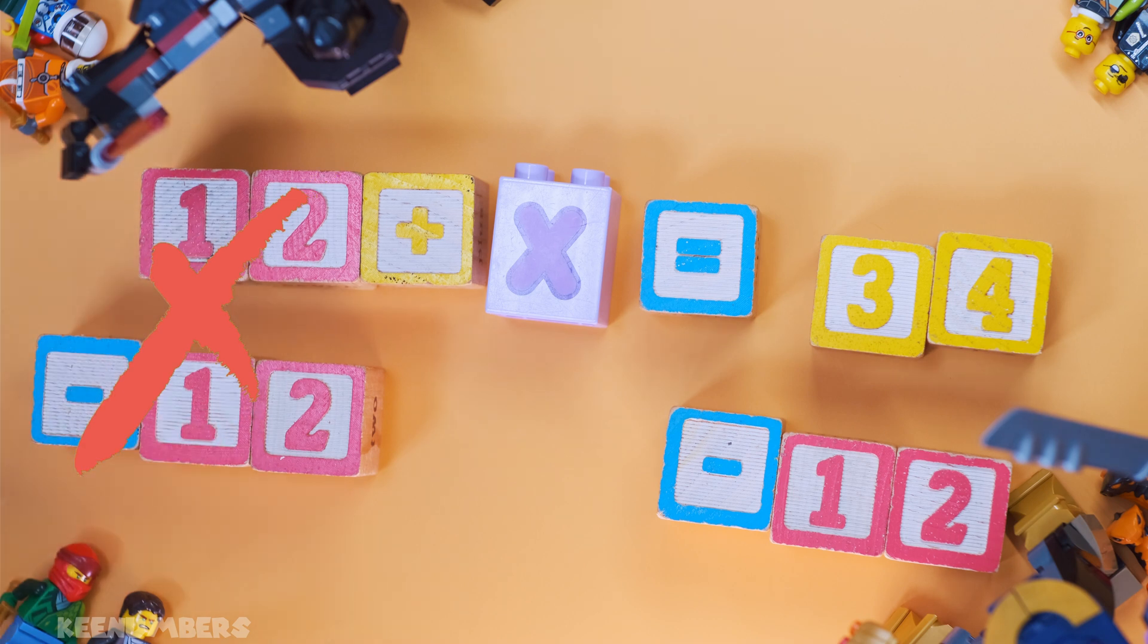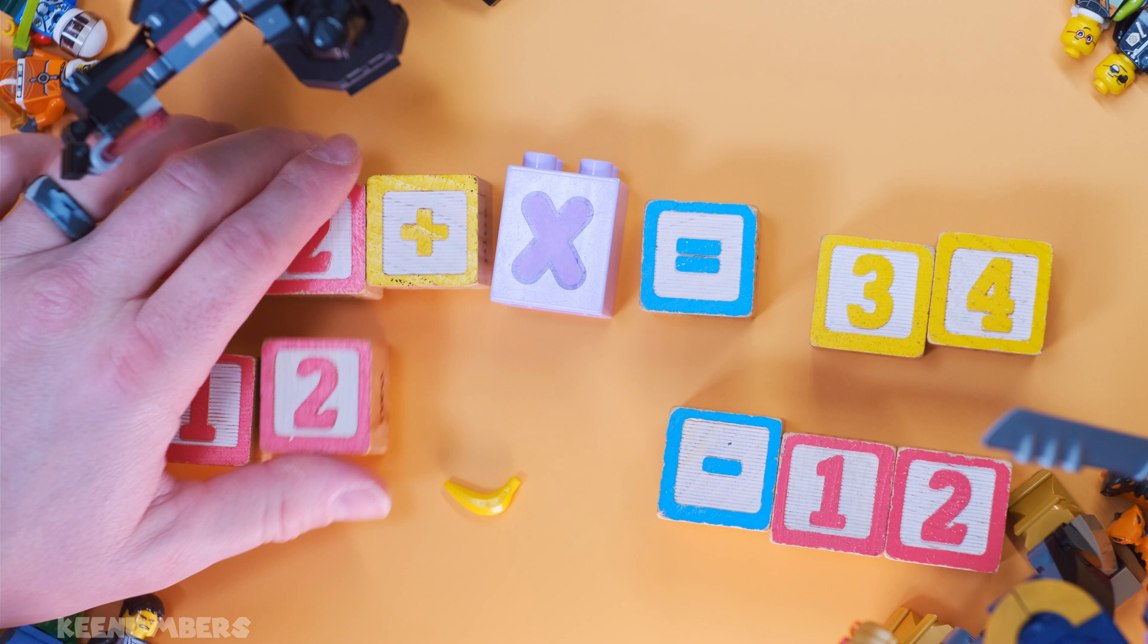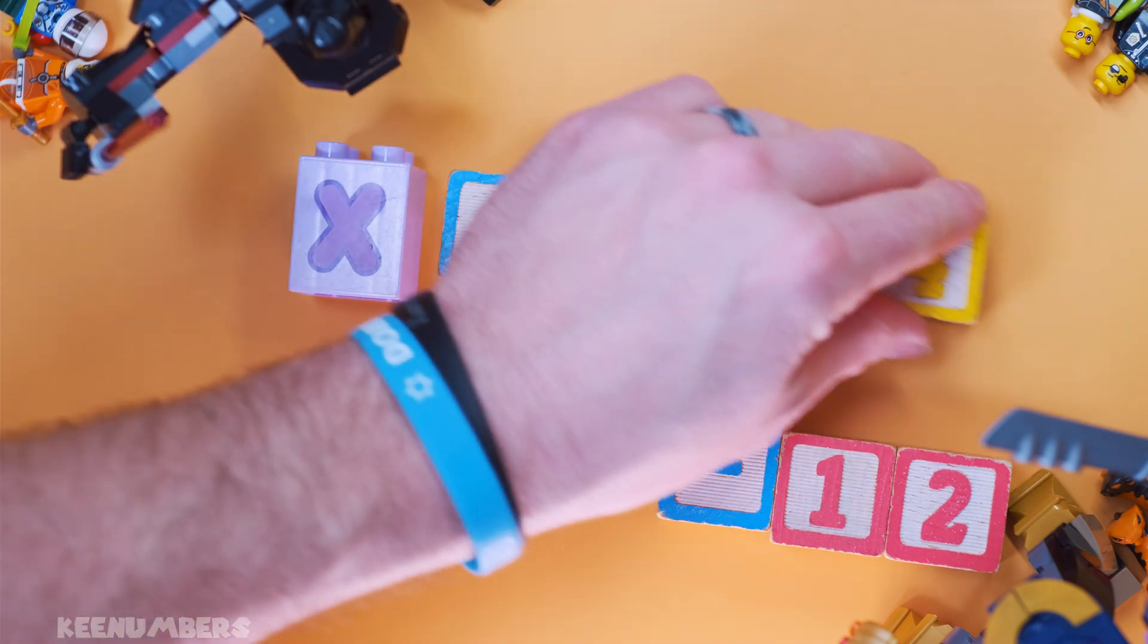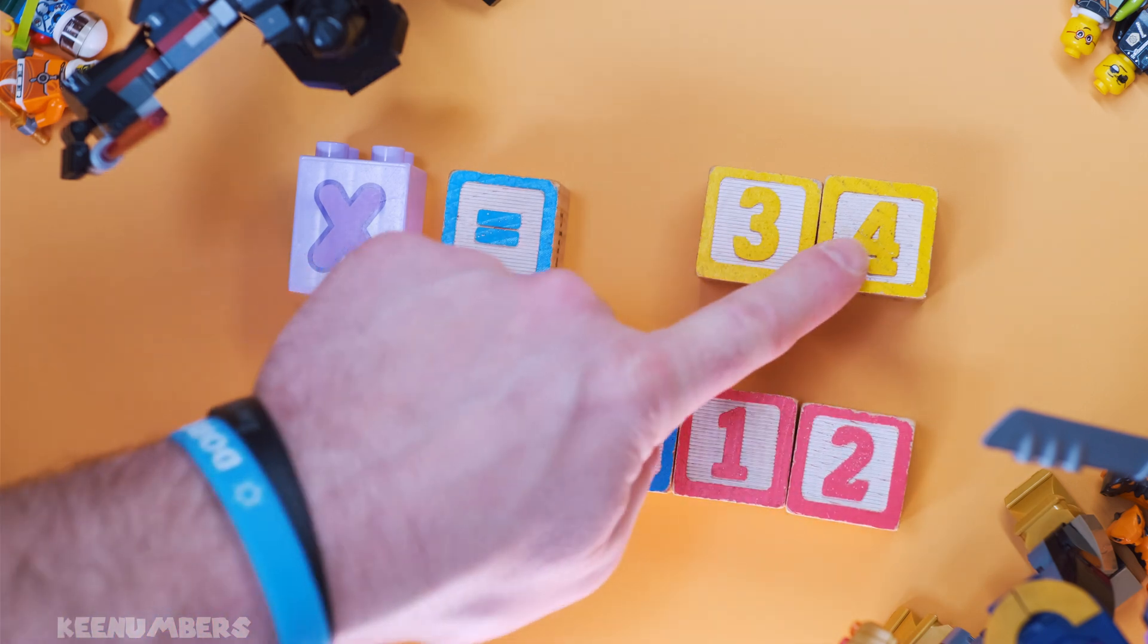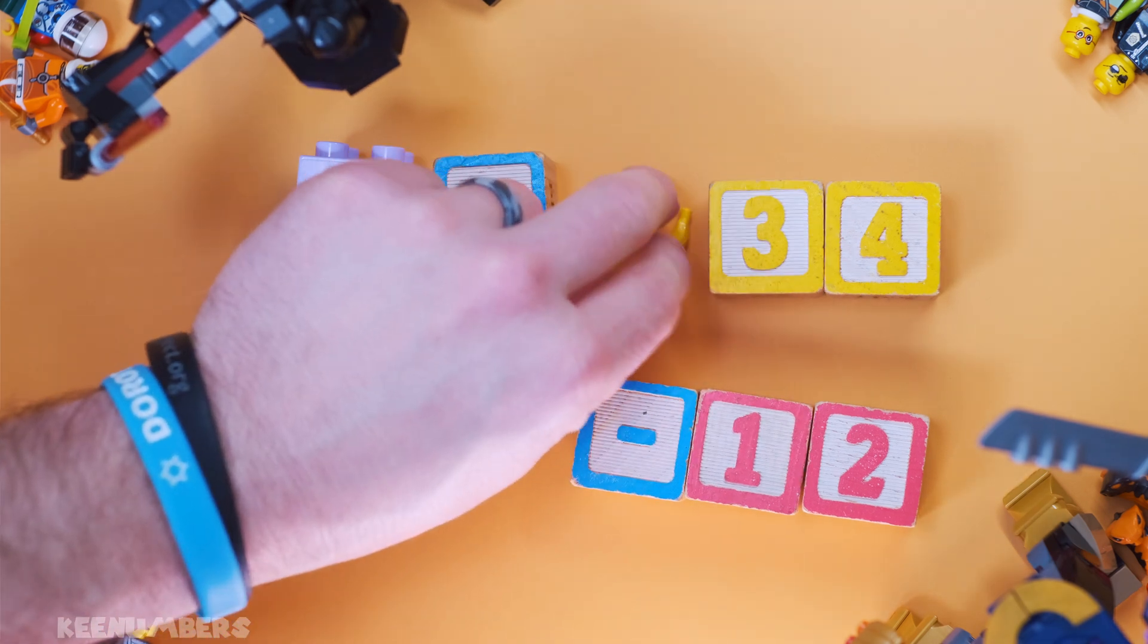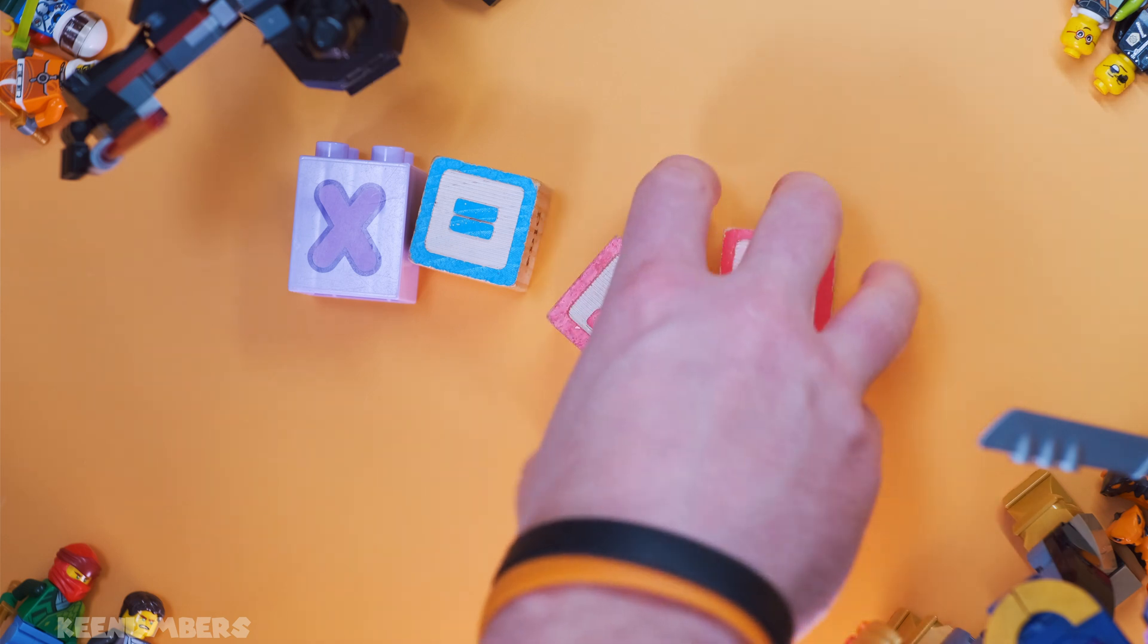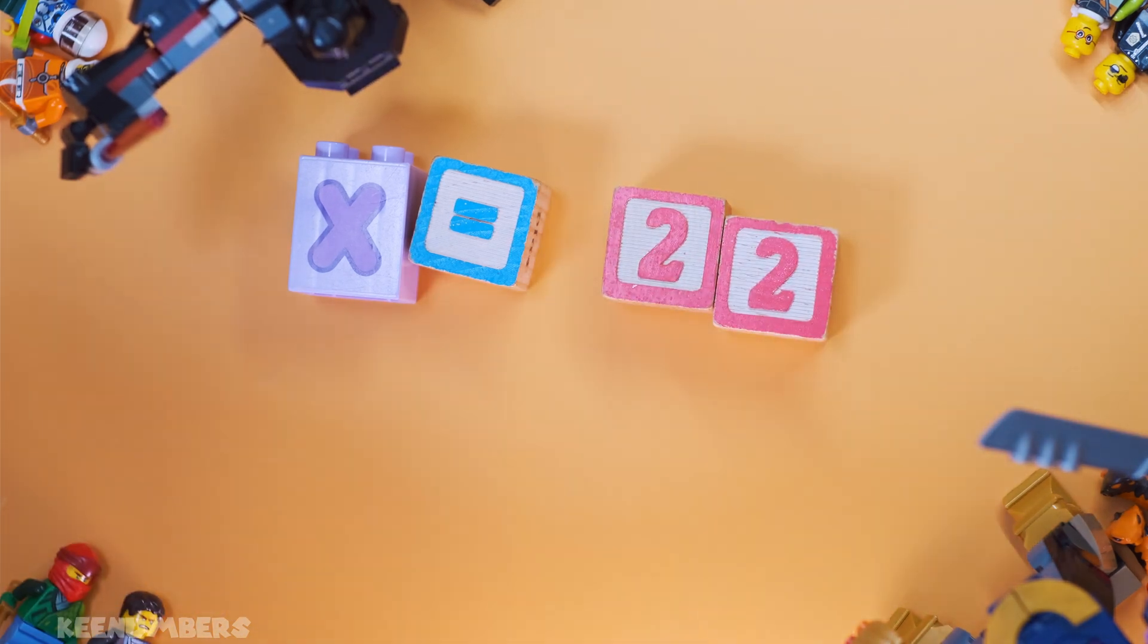12 minus 12, you know what that is. That's a big ol' whopping zero. So all we have left is just good old-fashioned X, which is equal to 34 minus 12. 34 take away 12, that's easy. You guys know what 34 take away 12 is. It's good old 22. So X is equal to 22. Ain't so bad, right?